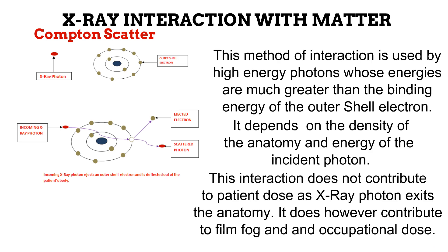However, because the photon is deflected out of the patient's body, it can fog the image receptor with useless densities that do not accurately represent the anatomy, or it can be deflected and absorbed by whoever is near the patient during the procedure. This explains why Compton scatter forms most of the radiation that radiographers receive during a procedure.